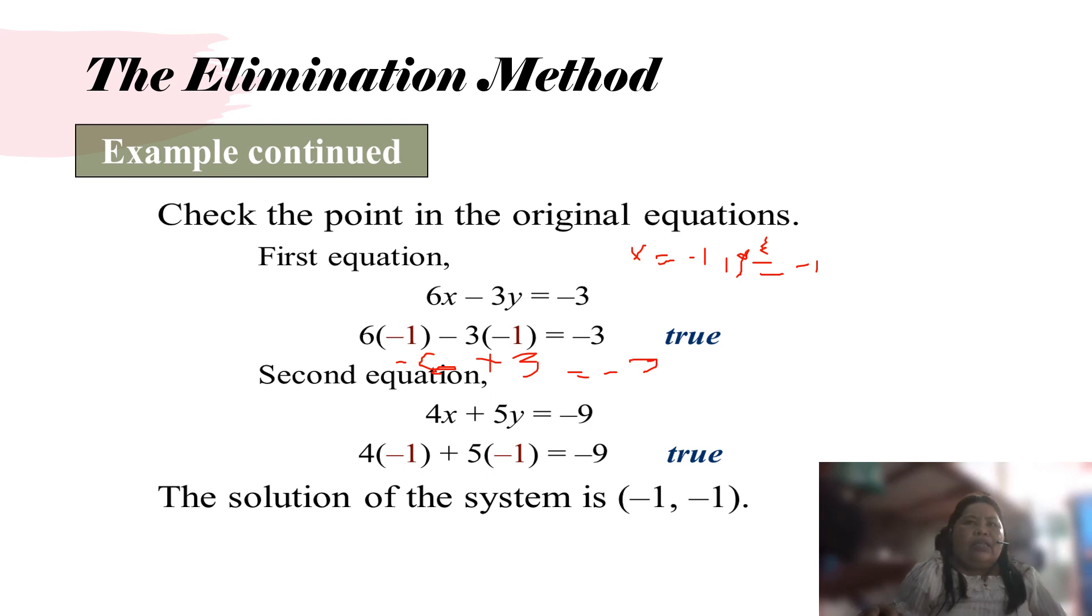For the second equation, 4x plus 5y equals negative 9. So 4 times negative 1 equals negative 4, plus 5 times negative 1 equals negative 5, so we got negative 9. It's true. Our answer is correct. So the solution of the system is negative 1, negative 1.